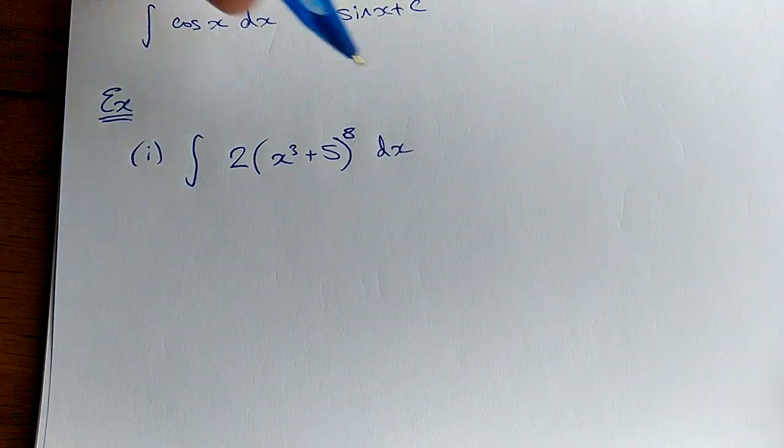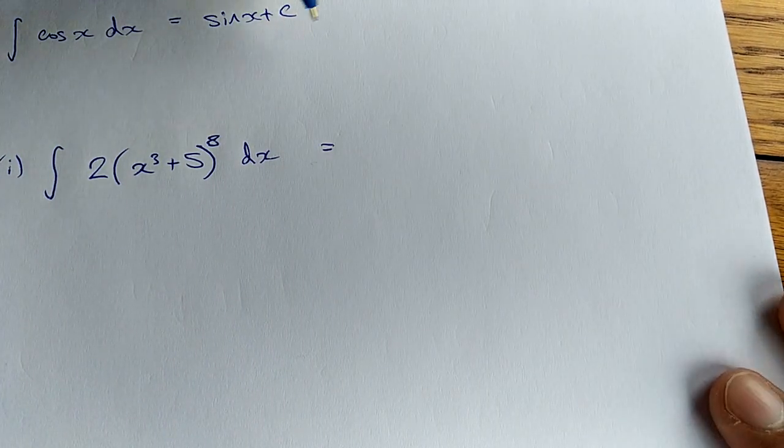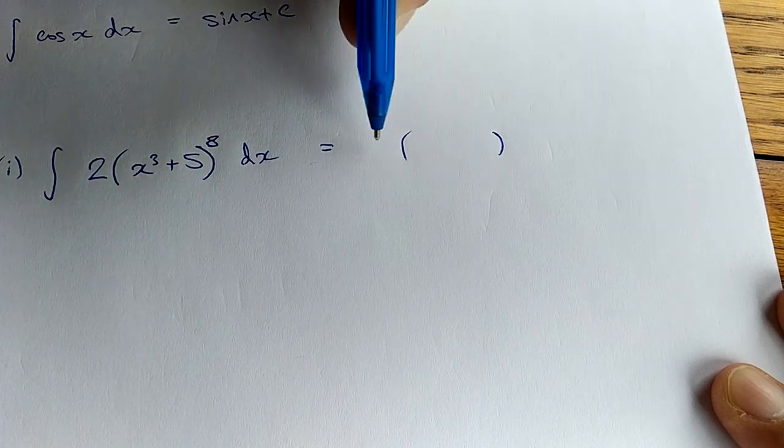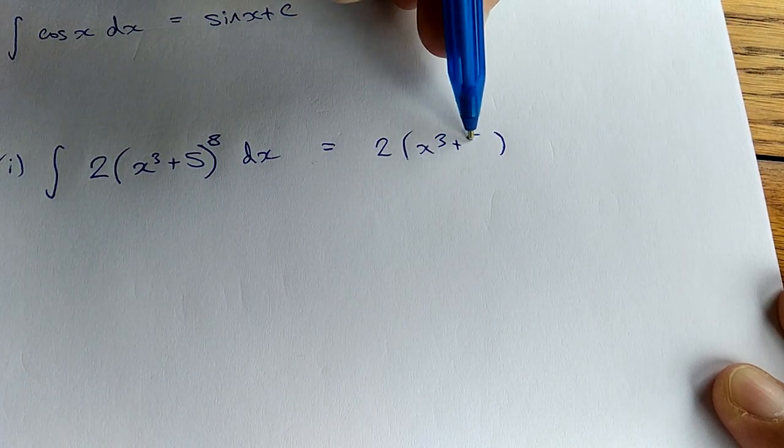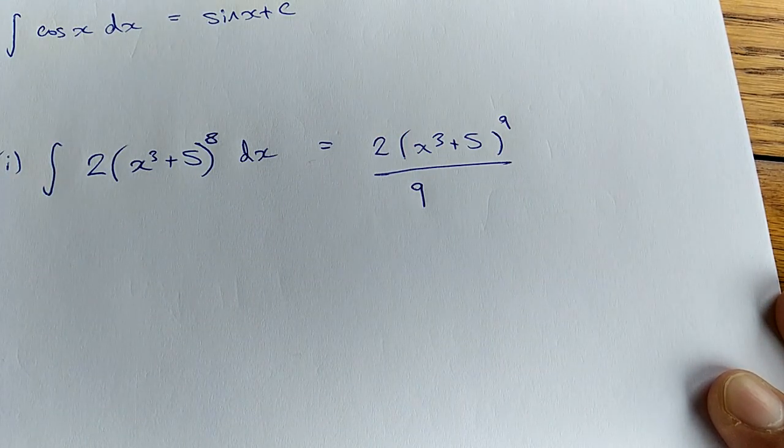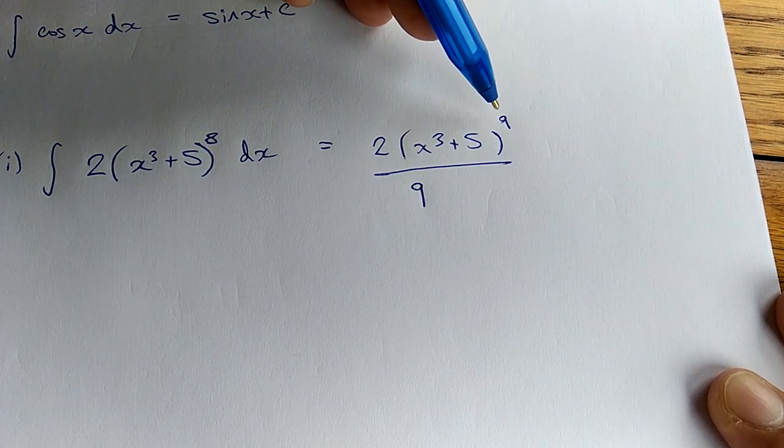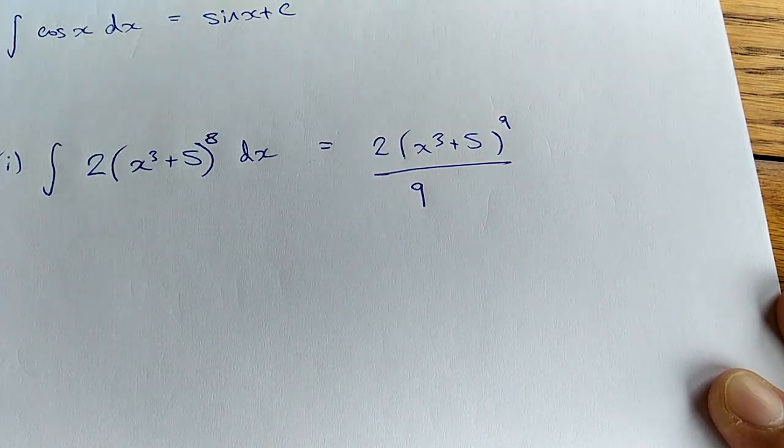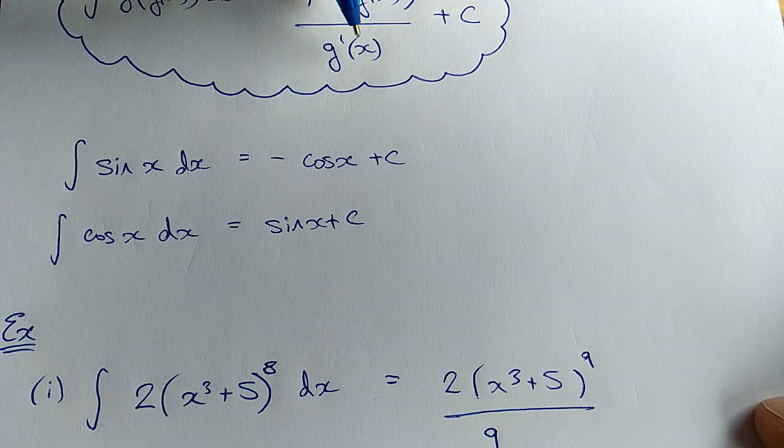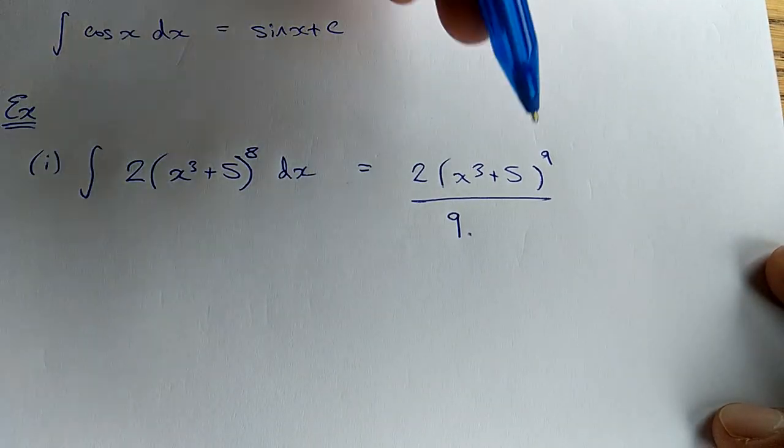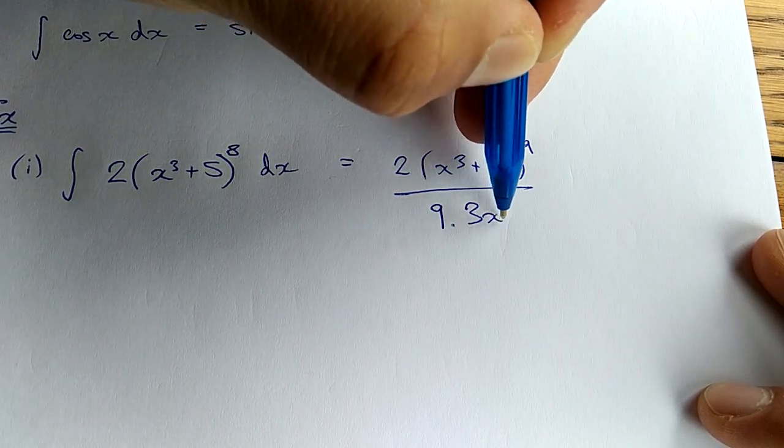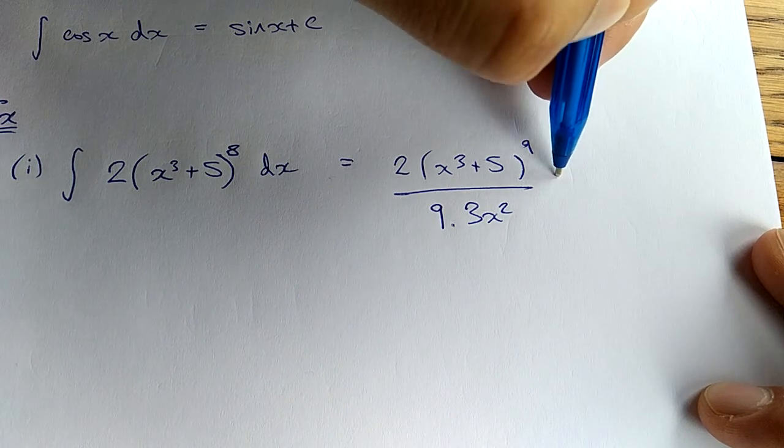So we're going to integrate this. The rule states that you add 1 to the power, so let's write down our equation as is. Add 1 to the power, that becomes a 9, divide by the new power, like so. You can see I've integrated the outside function, I've added 1 to the power and divided by the new power. Then you also divide by the derivative of what's inside the bracket.